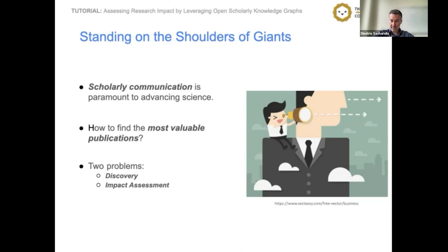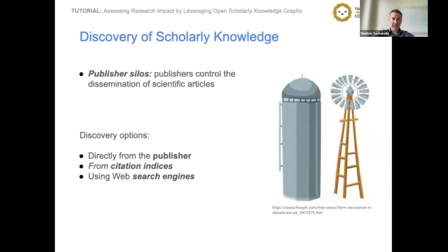First, I would like to talk briefly about discovering scholarly knowledge. Articles are disseminated by publishers who have complete control over this process, which they monetize. Papers, including information about them, are placed in isolated publisher silos. To discover them there are different options. Traditionally one can directly refer to the publisher who maintains a collection of books and journal series organized along scientific topics, but you manually have to consider different publishers.